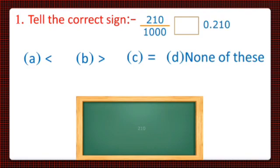So we'll write the numerator and then how many number of zeros are there in denominator, we'll leave that many digits from right to left and put the decimal point. So the decimal value we get is 0.210 which is equal to another decimal value which is given. So we'll put the equal to sign which is given in option C. So our option C is the correct answer. So let's tick option C.